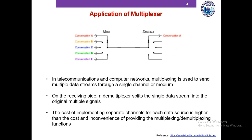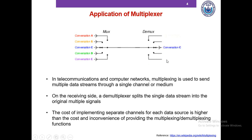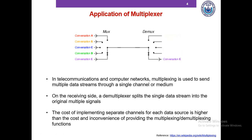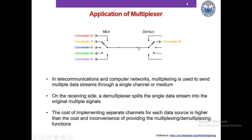Multiplexers are commonly used for low-cost data transmission. In computer networks and communication, multiplexing is used to send multiple data streams through a single channel or medium. On the receiving side, the demultiplexer does the inverse operation, splitting the single data stream into the original multiple signals. The cost of implementing separate channels for each data source is higher than providing the multiplexing operation at the sending end and the demultiplexing operation at the receiving end. That's why multiplexers enable us to perform cost-efficient data transmission.